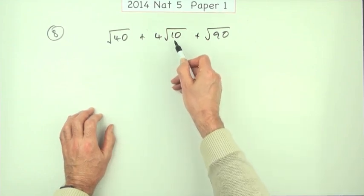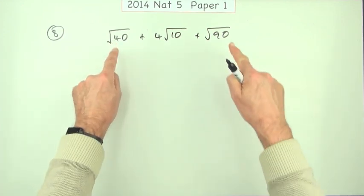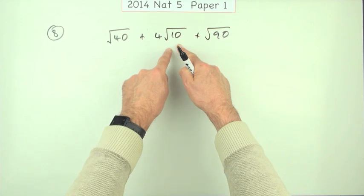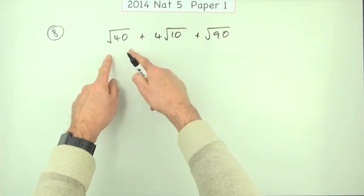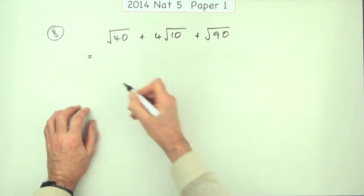So that one's actually as simple as it can get. And the only way that they could add on to this one would be if they were also some number of root 10 and some number of root 10. And are they?